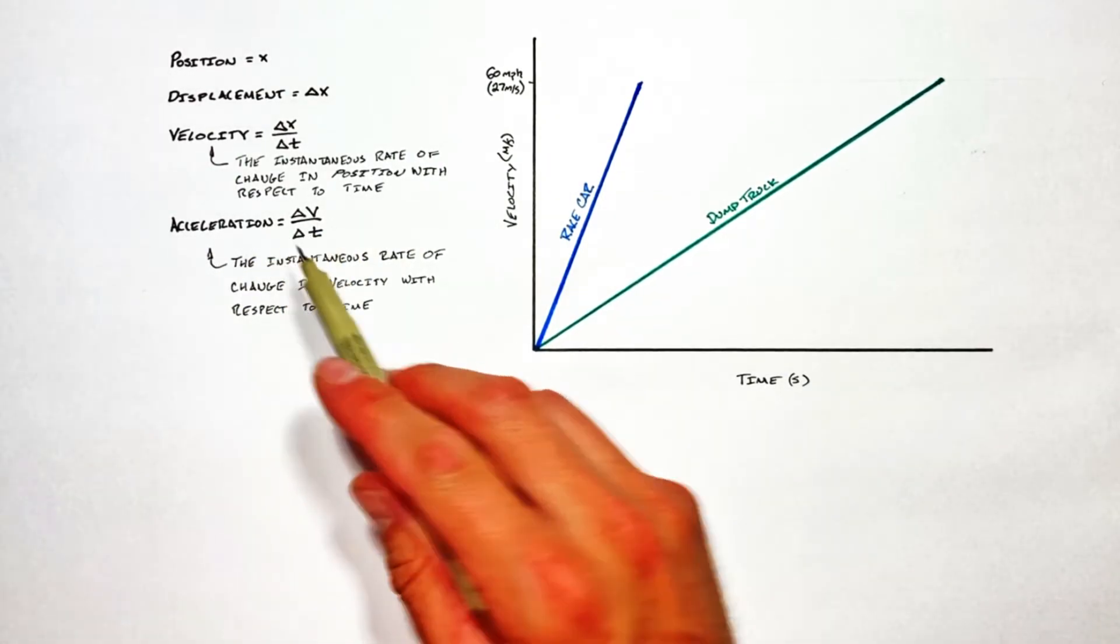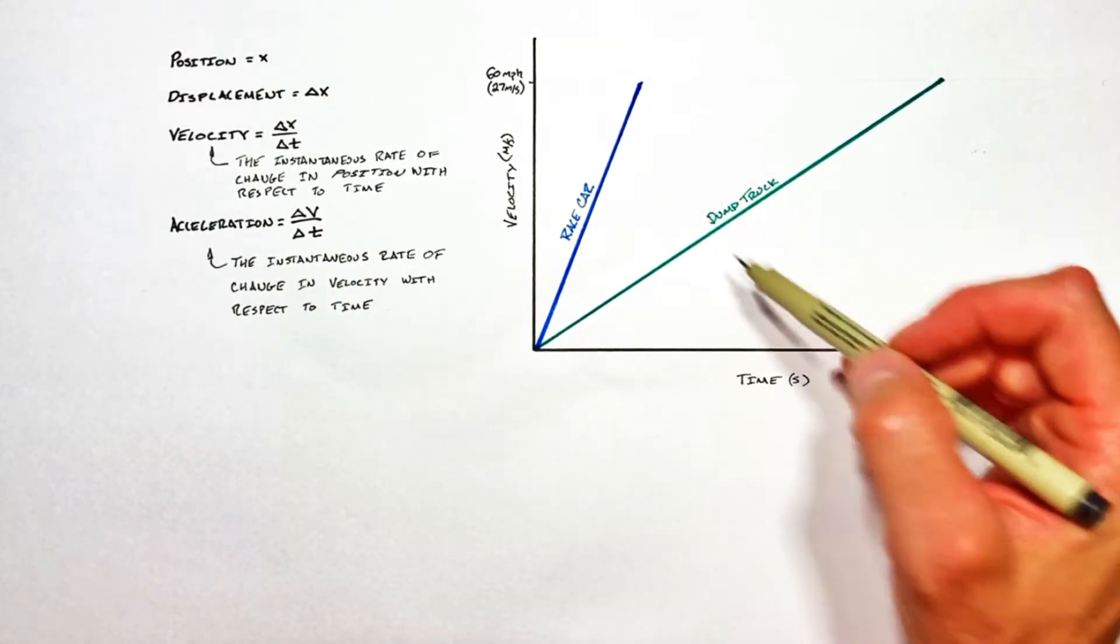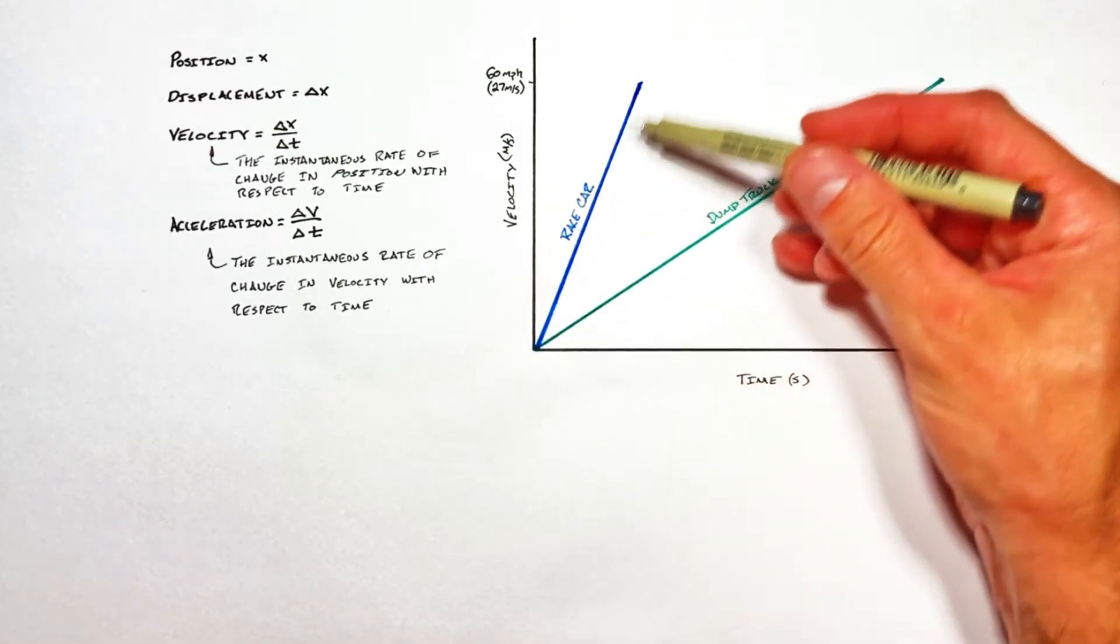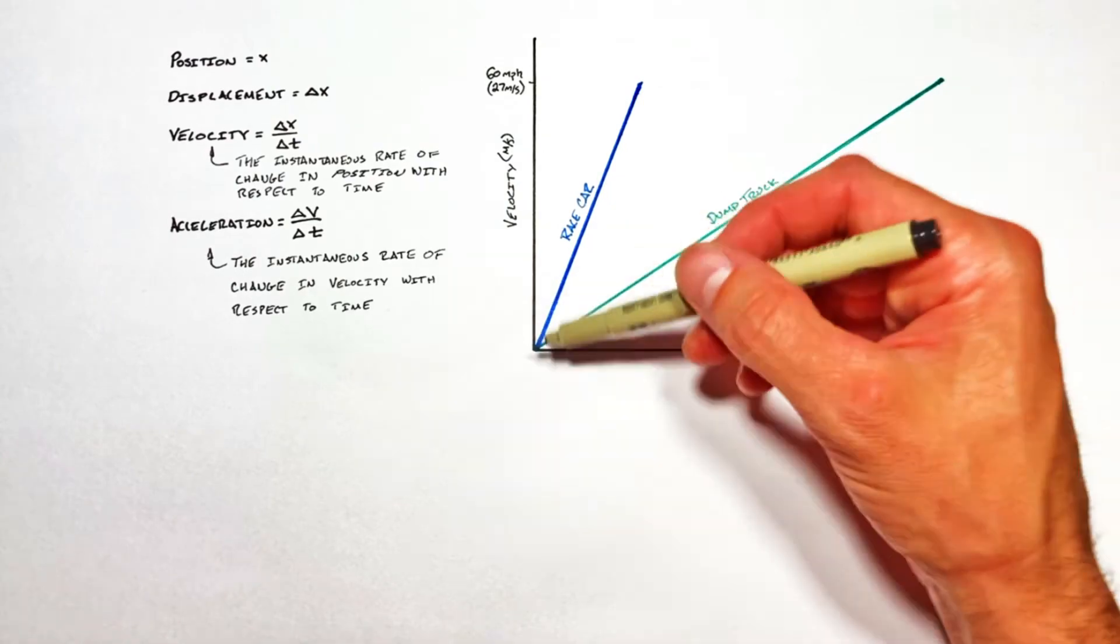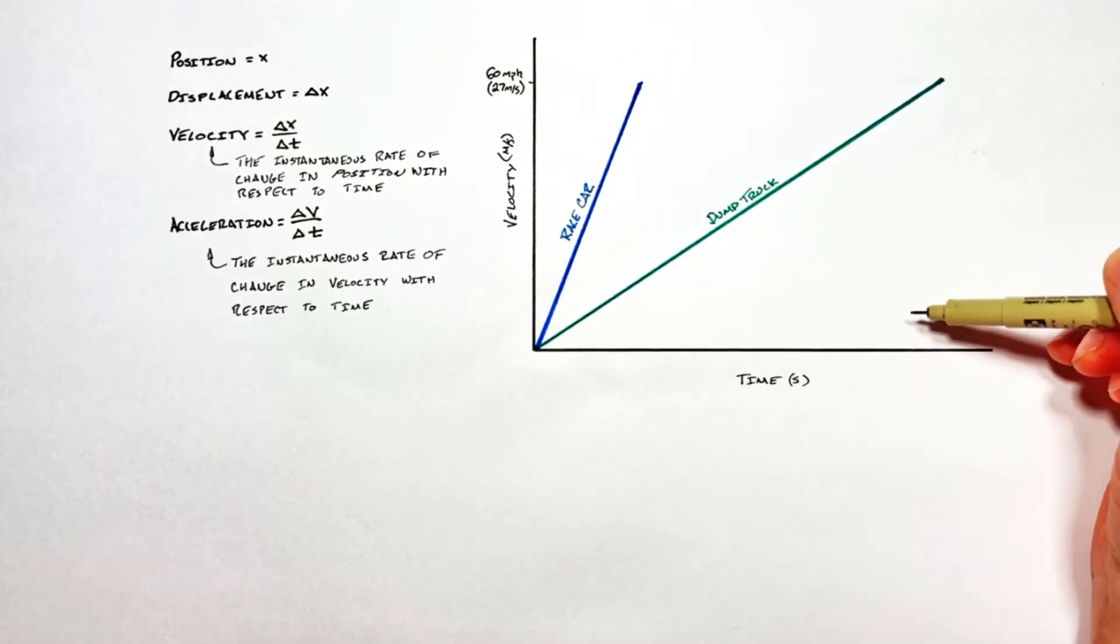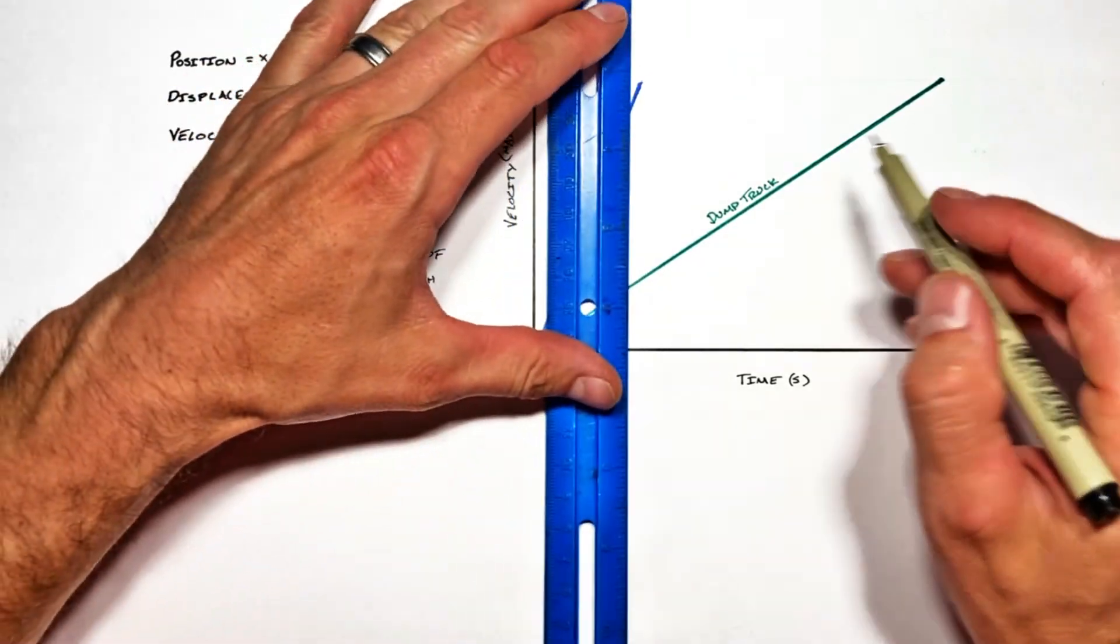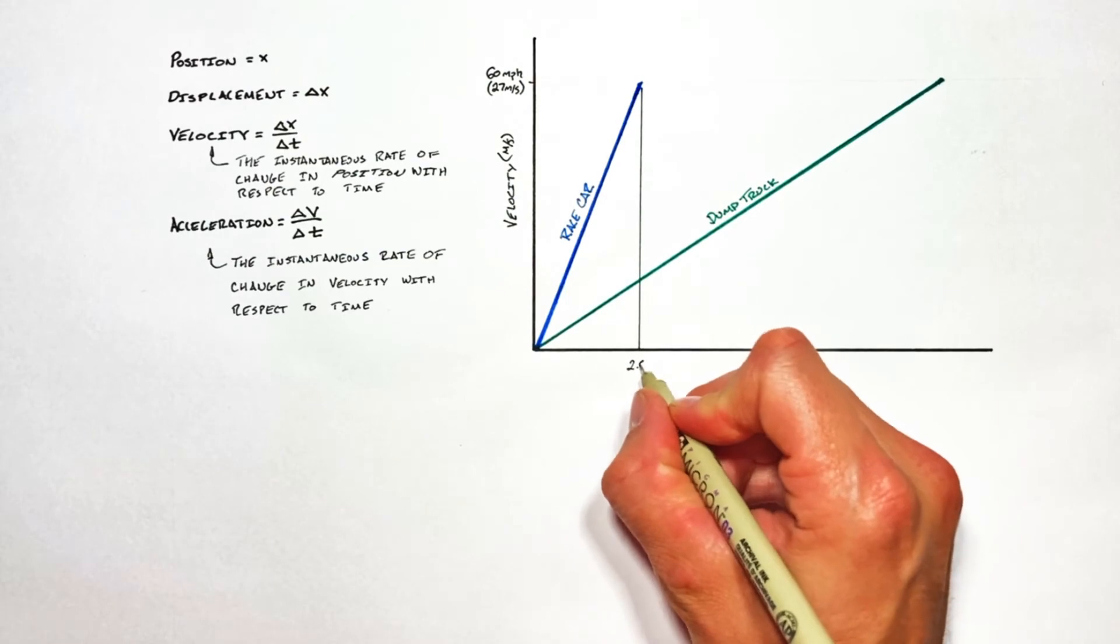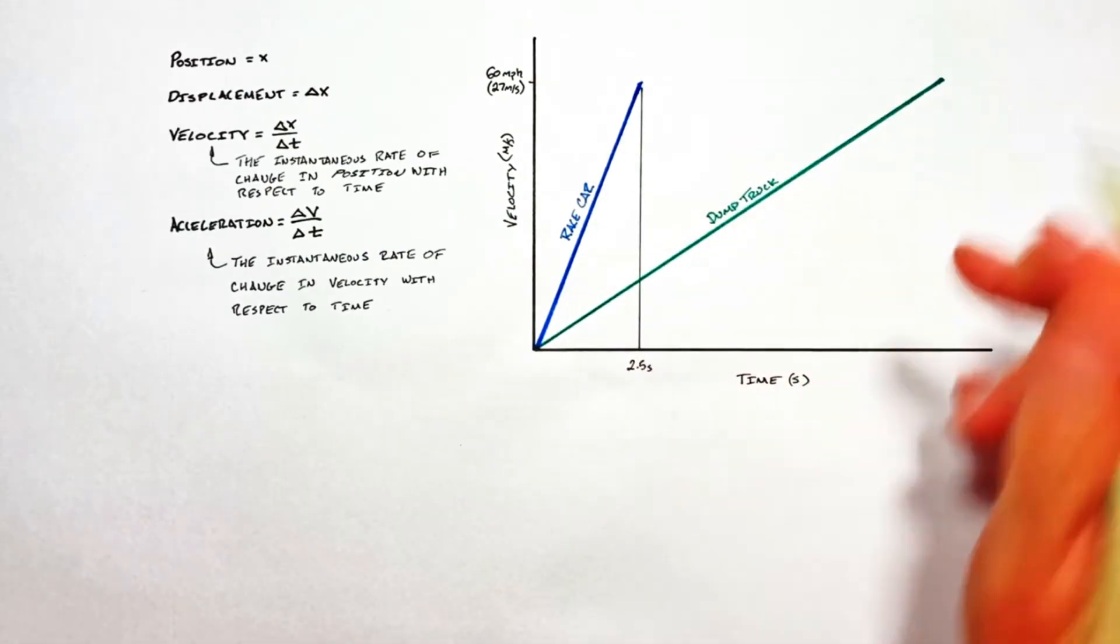To actually calculate the acceleration of either vehicle, we're going to need a little more than what's been drawn on this graph. We have a change in velocity for both vehicles—that's 27 meters per second—but I didn't label how long that takes. Let's say our race car is going to take 2.5 seconds to go from 0 to 60.